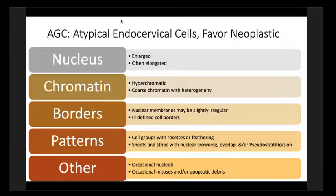For atypical endocervical cells favor neoplastic, we're further along the spectrum. The nuclei go from round to more elongated. Chromatin is more hyperchromatic with some coarsening. Borders are becoming ill-defined and less cohesive. We start to see beginnings of rosettes or feathering, but not quite overtly into an AIS-type situation. Crowding and overlapping are more prominent in these groups.